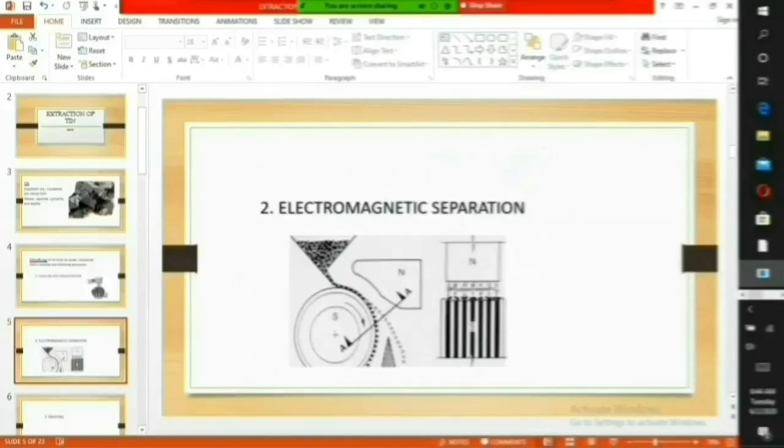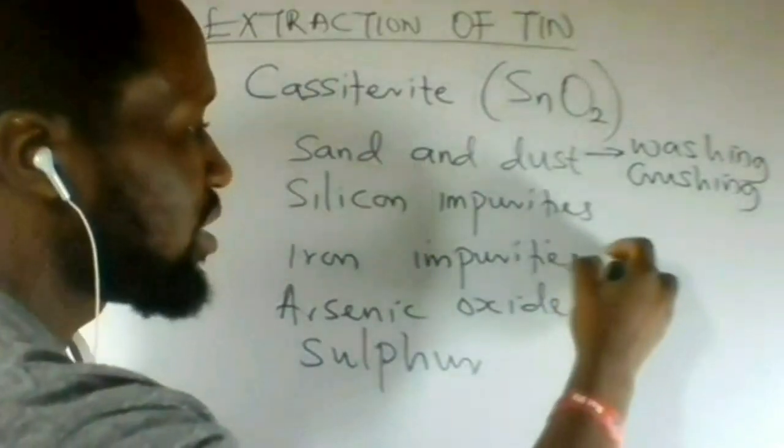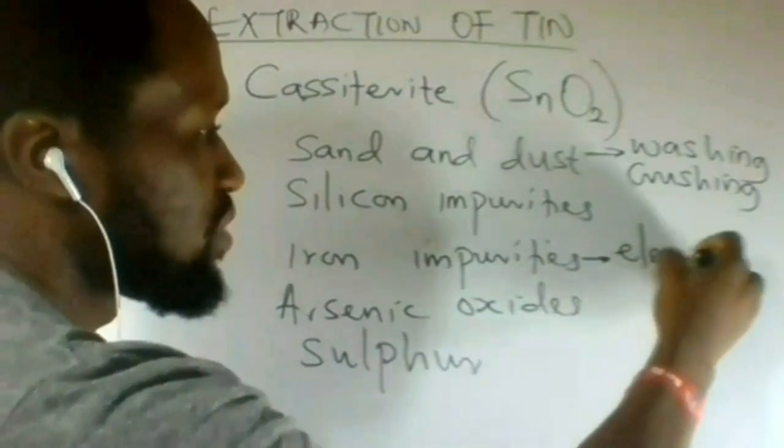Number 2. Electromagnetic separation. The magnetic components of these impurities can be removed. The iron impurities are magnetic and can be removed by electromagnetic separation.